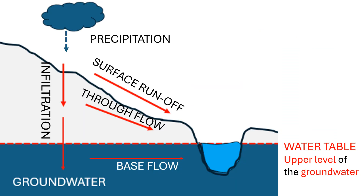The main source of water for the drainage basin is precipitation, mainly in the form of rainfall. Once the precipitation hits the surface of the earth, one of two things can happen: it can remain on the surface or it can soak into the earth. Water that remains on the surface and moves toward the river is called surface runoff. Water that soaks into the earth undergoes the process of infiltration. Infiltrated water can move through cracks and holes in the earth and eventually reach the river — that process is called throughflow — or it can accumulate inside the ground as groundwater.